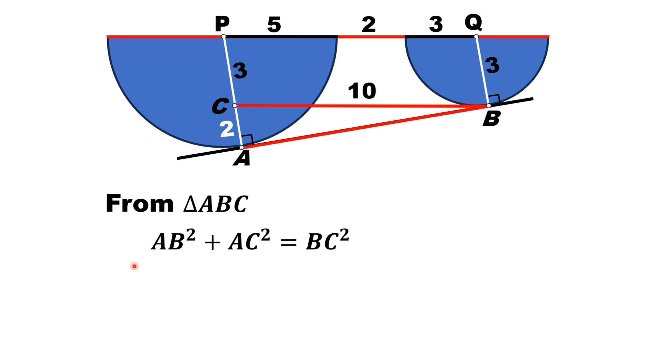Using famous Pythagorean theorem on this triangle, AB² + AC² = BC². Substituting the values of AC and BC, we have AC is equal to 2 and BC is equal to 10.